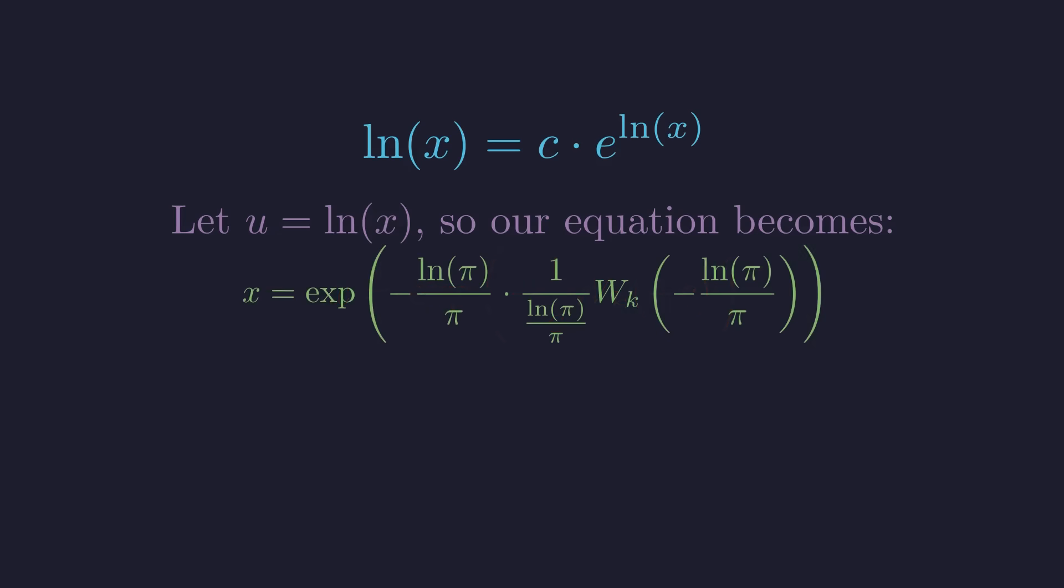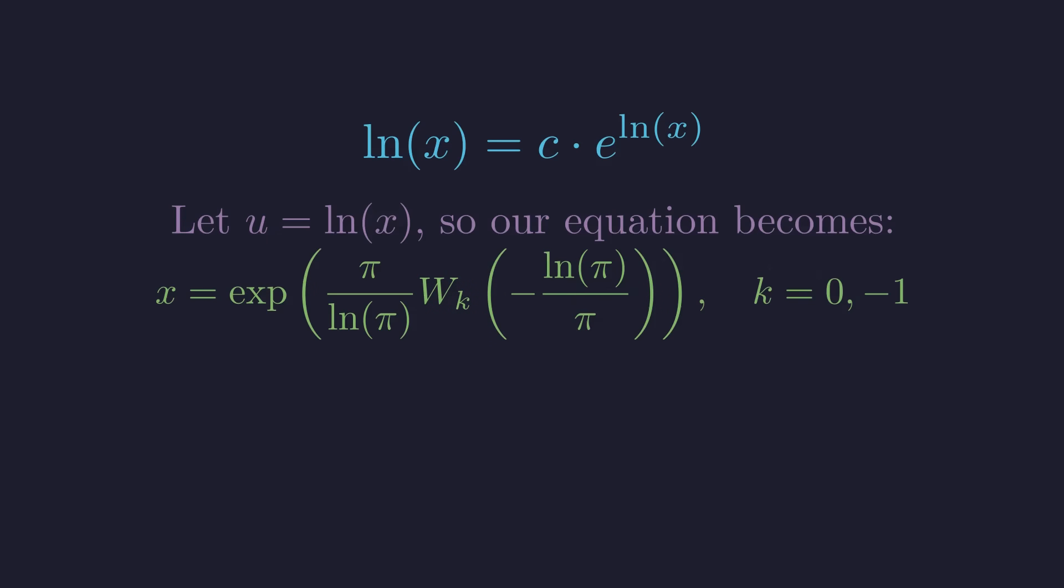Substituting c gives us this expression. Notice that negative 1 over c becomes negative pi over the natural log of pi. We can simplify. 1 over the fraction natural log of pi over pi becomes pi over natural log of pi. And there we have it. Our exact solution in terms of the Lambert W function. The two branches k equals 0 and negative 1 give us both solutions.